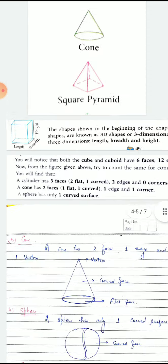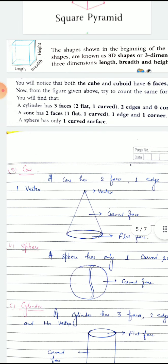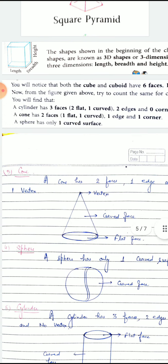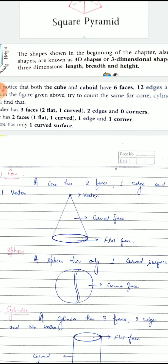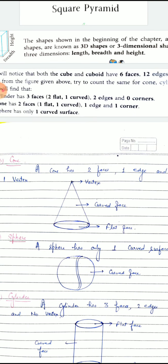But in cone, look at this figure. A cone has 2 faces only: one curved face and one flat face. There is one vertex only and one edge.